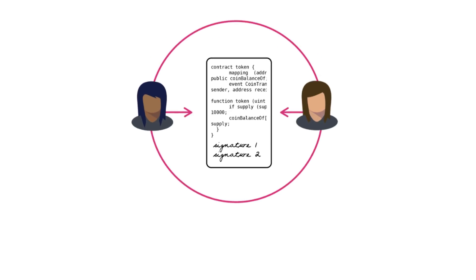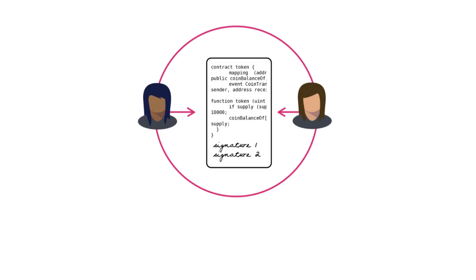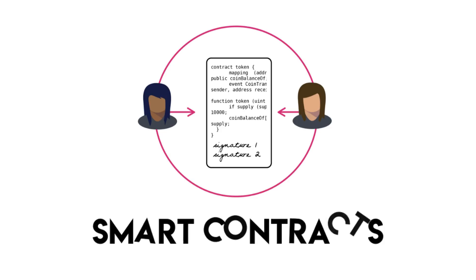Ethereum is also a public blockchain network, and its appeal is that it has its own Turing-complete scripting language that lets developers build what are called smart contracts. Smart contracts are strings of computer code capable of automatically executing when certain predetermined conditions are met, instead of requiring a single central authority to say yay or nay.